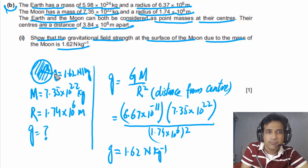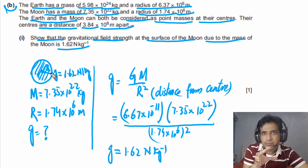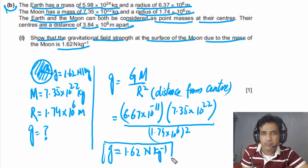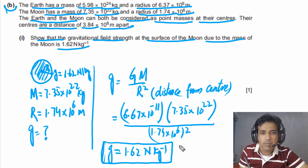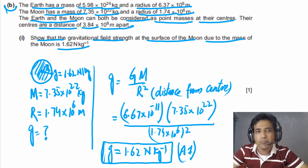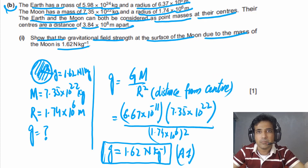This question has only one mark (an answer mark). If you have shown g = 1.62 N/kg, you will get that mark. It is a very straightforward question — you simply need to plug in values if you have a basic understanding of gravitational field strength.